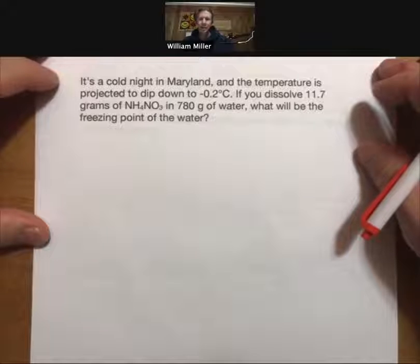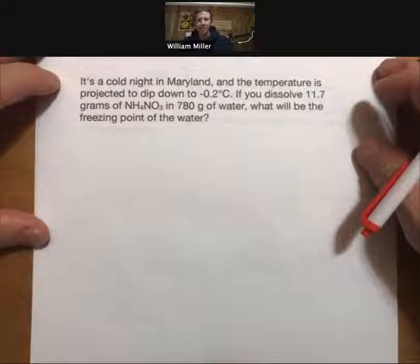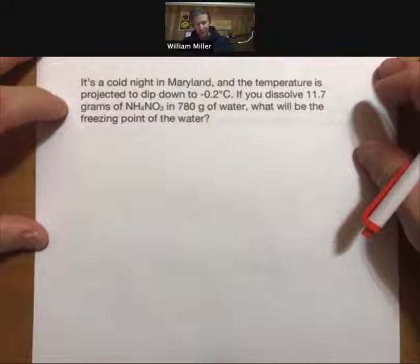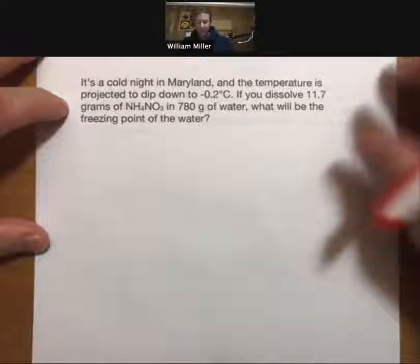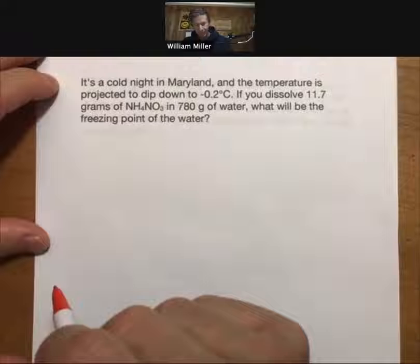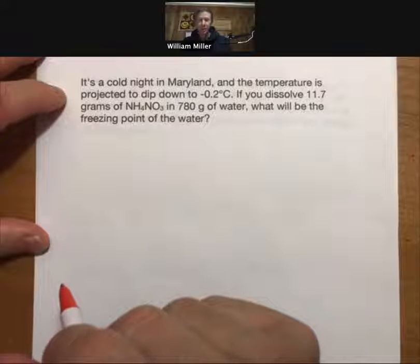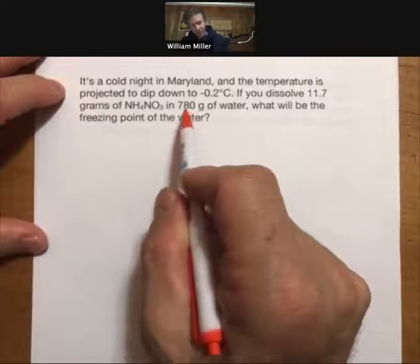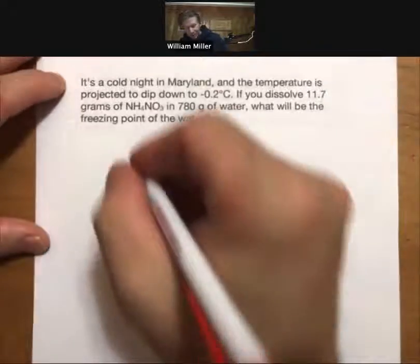It's supposed to be a cold night in Maryland and the temperature is projected to dip down to minus two degrees Celsius. If you dissolve 11.7 grams of ammonium nitrate in 780 grams of water, what will be the freezing point of the water? So this is going to be a freezing point depression problem.